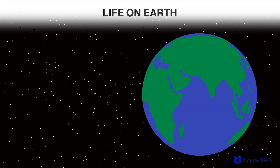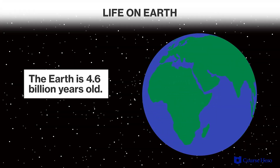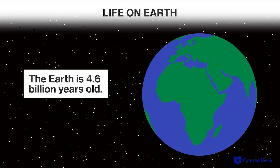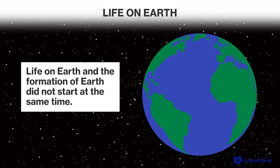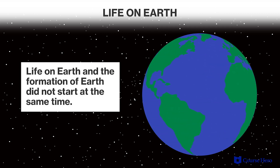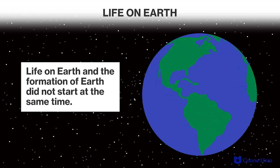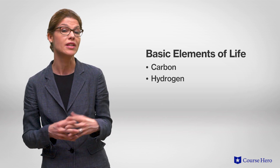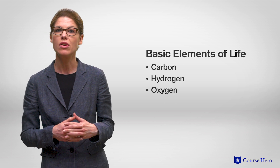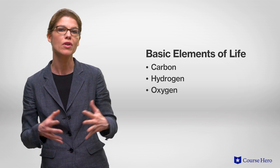Scientific evidence indicates that Earth is 4.6 billion years old. The formation of Earth and the beginnings of life on Earth, however, did not occur at the same time. Before there could be either microevolution or macroevolution, the conditions for life needed to exist. The basic elements of life — carbon, hydrogen, and oxygen — existed on Earth long before there was life.